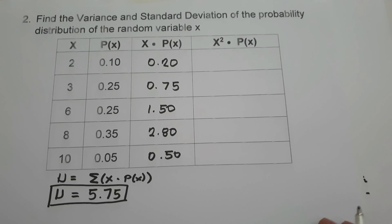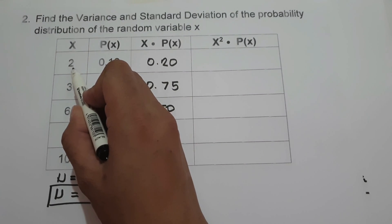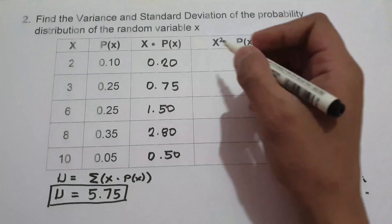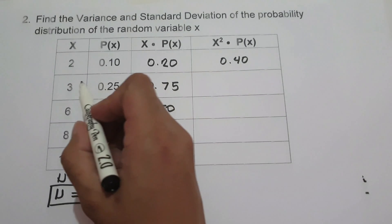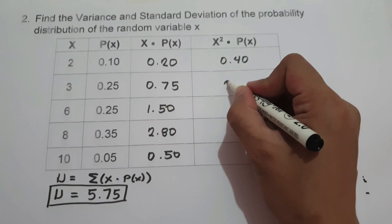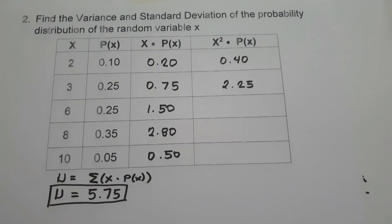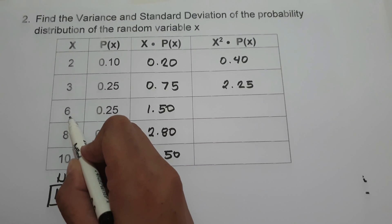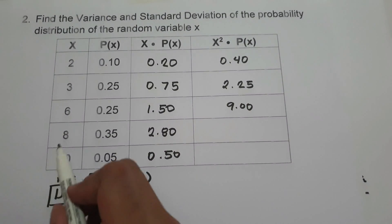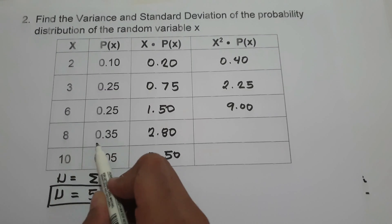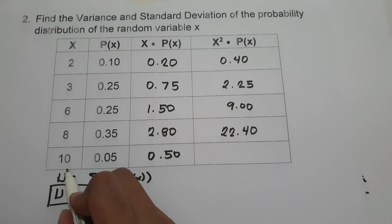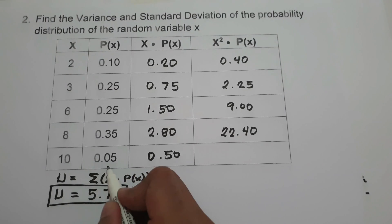To find the last column, we multiply x by itself and then multiply by p(x). So: 2 squared is 4, times 0.10 is 0.40. Then 3 squared is 9, times 0.25 is 2.25. Then 6 squared is 36, times 0.25 is 9. Then 8 squared is 64, times 0.35 is 22.40. And 10 squared is 100, times 0.05 is 5.